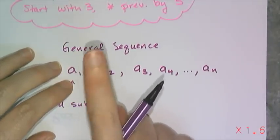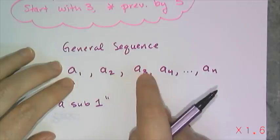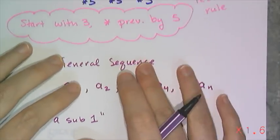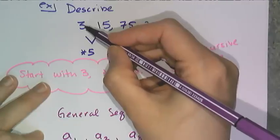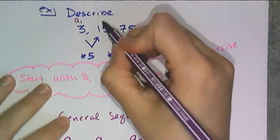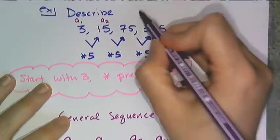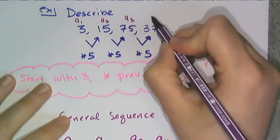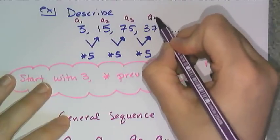Now remember, sequences are ordered. So first term, second term, third term, fourth term matters. So if I look back up at this original sequence, 3 is the a sub 1 term, and 15 is the a sub 2 term, 75 is a sub 3, and 375 is a sub 4.